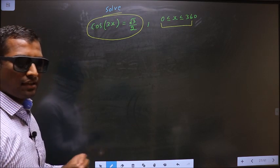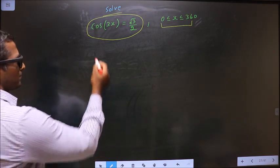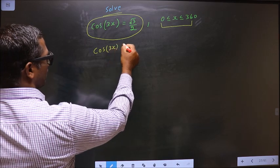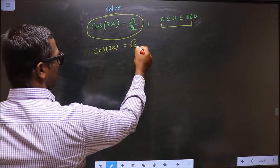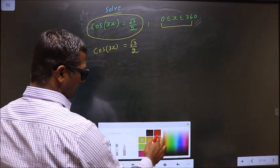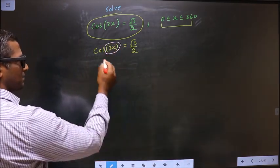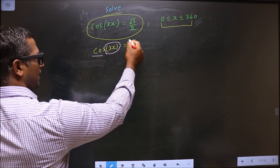First, the given equation is cos 3x equal to root 3 by 2. Now to get the values for 3x, here it is cos and here it is positive.